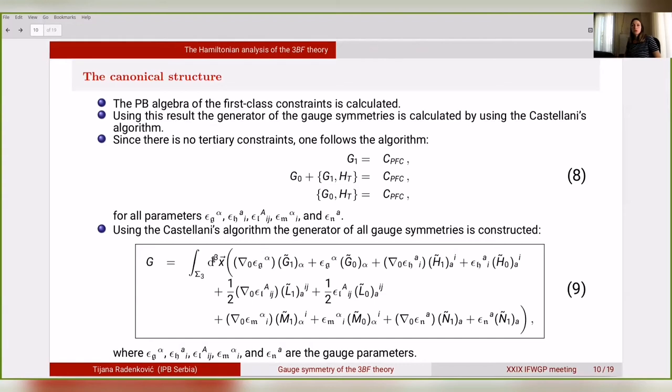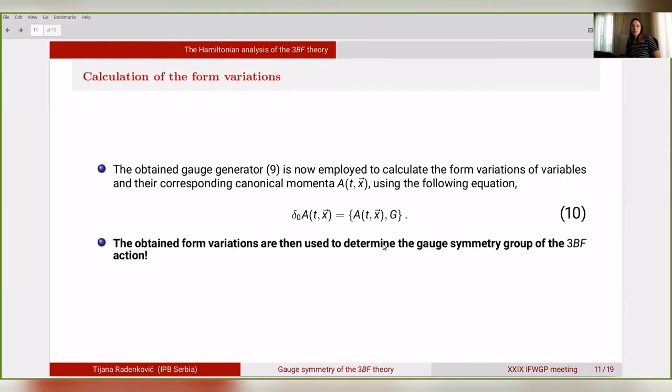Now we can proceed to discuss the canonical structure of our 3BF theory. We found the first-class and second-class constraints present in the theory, as well as the Poisson bracket algebra. Then using this result, we found the generator of the gauge symmetries using Castellani's algorithm, and the generator is given by equation 9. Using this generator, we can proceed to calculate the form variations of variables and their corresponding canonical momenta, and then use the obtained form variations in order to determine the full gauge symmetry group of the 3BF action.